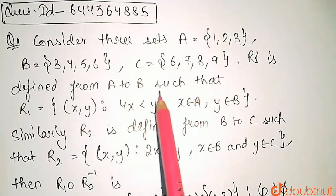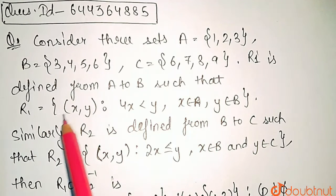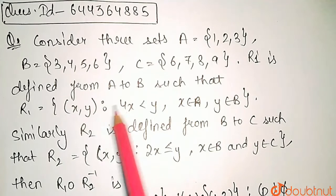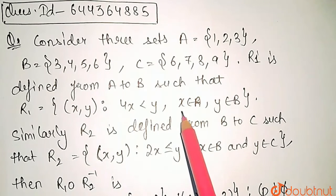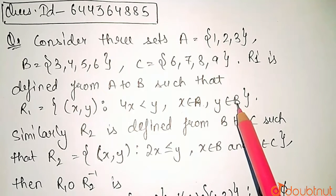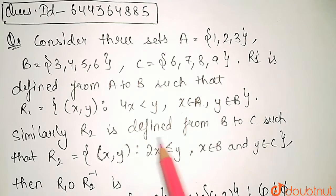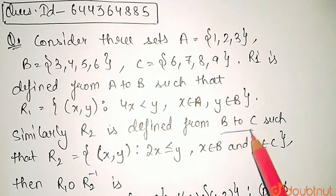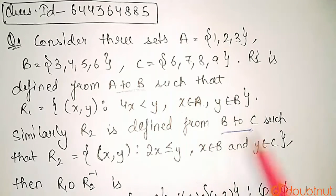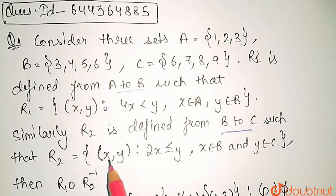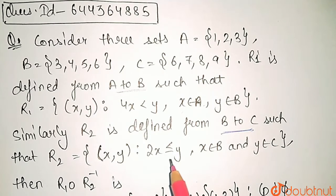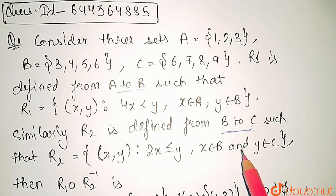Now, R1 is defined from A to B such that R1 equals ordered pairs (x,y) such that 4x < y, where x belongs to A and y belongs to B. Similarly, R2 is defined from B to C such that R2 equals (x,y): 2x ≤ y, where x belongs to B and y belongs to C.